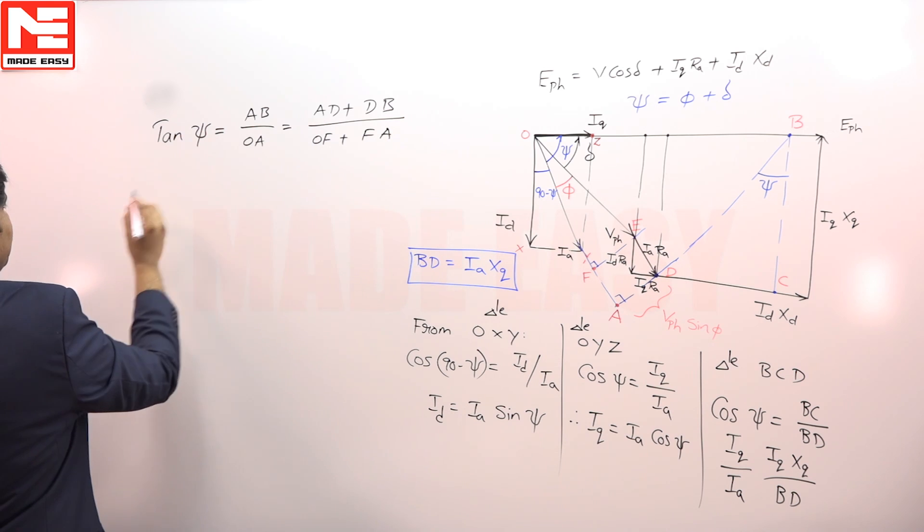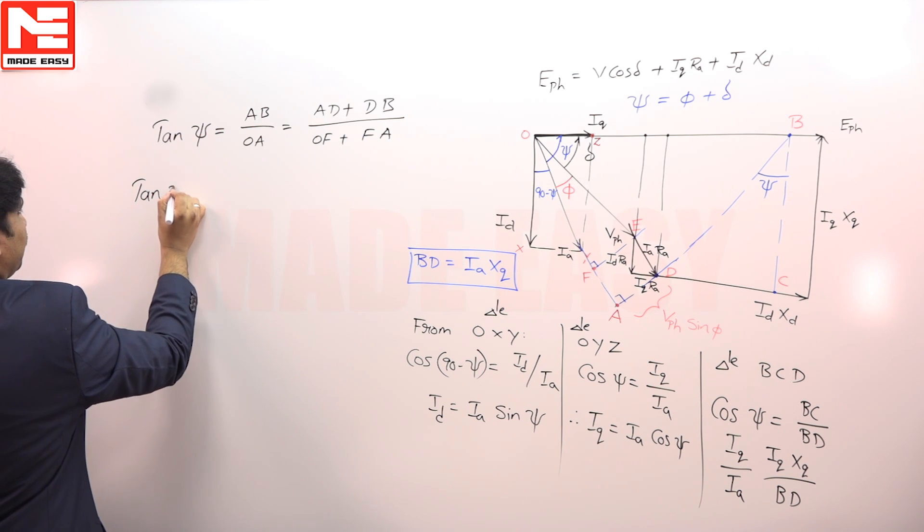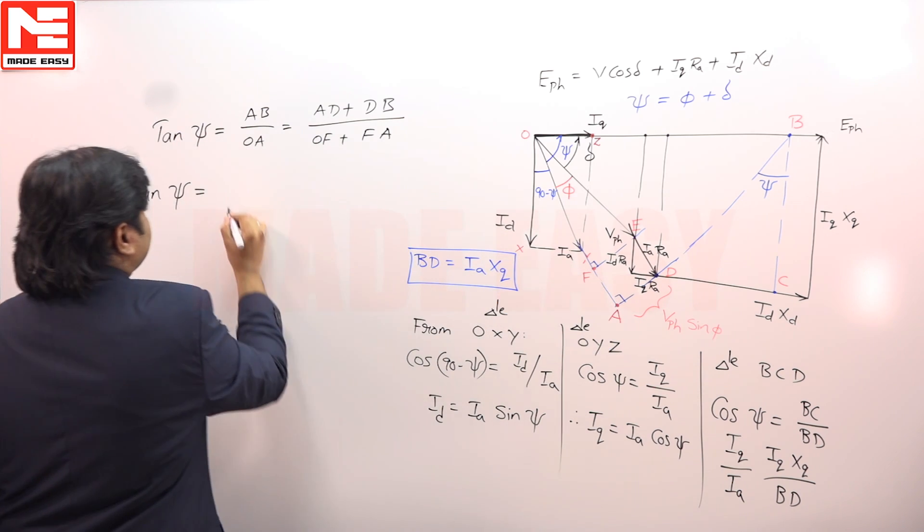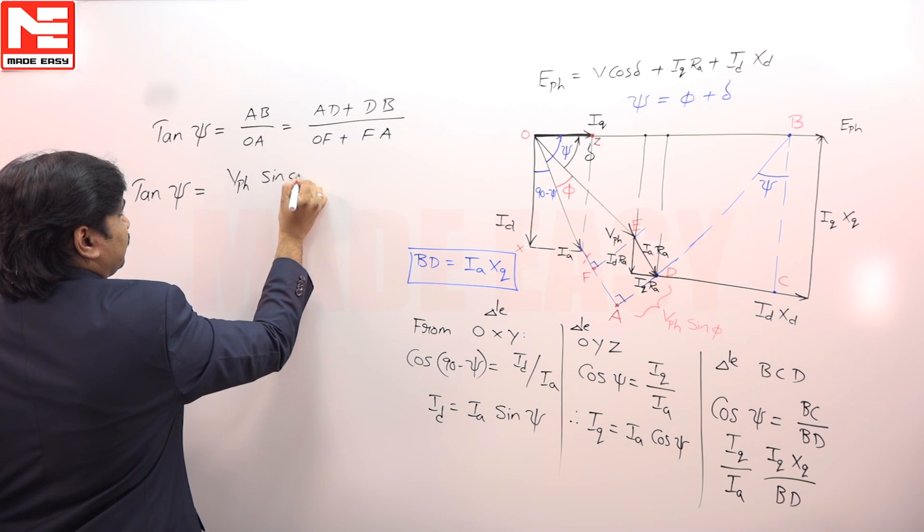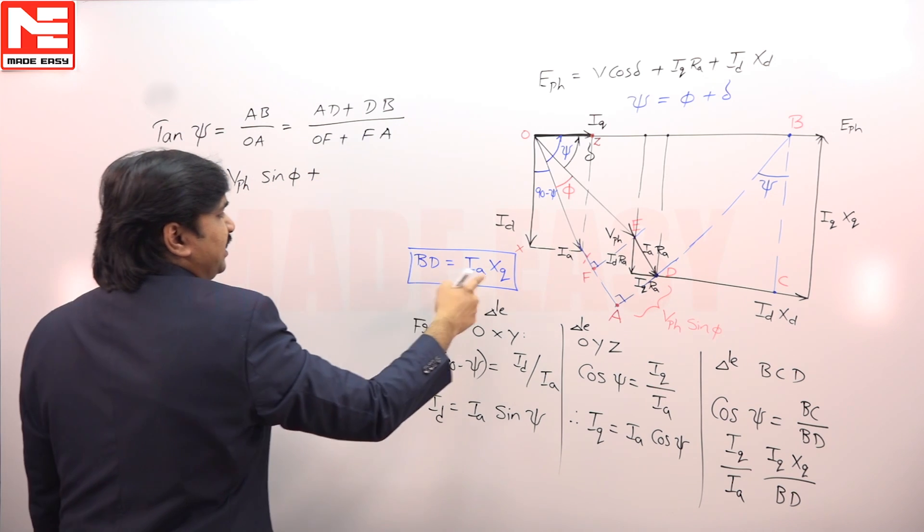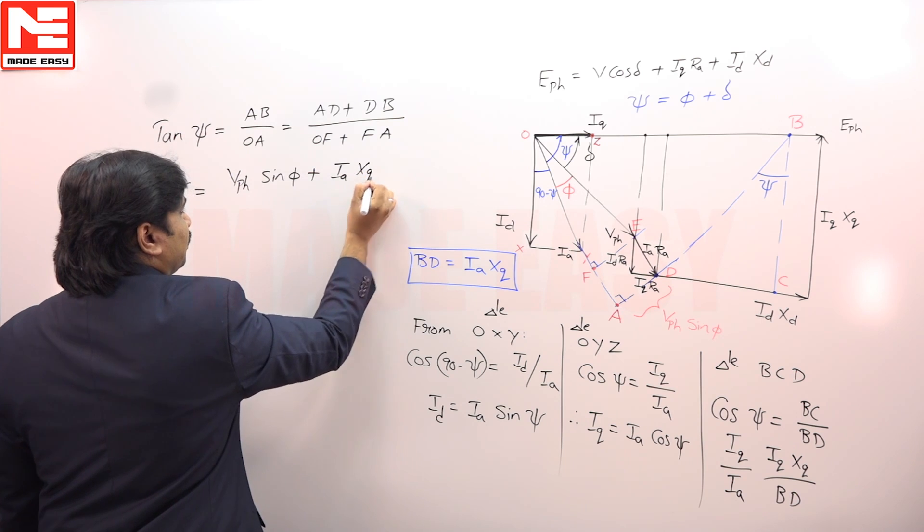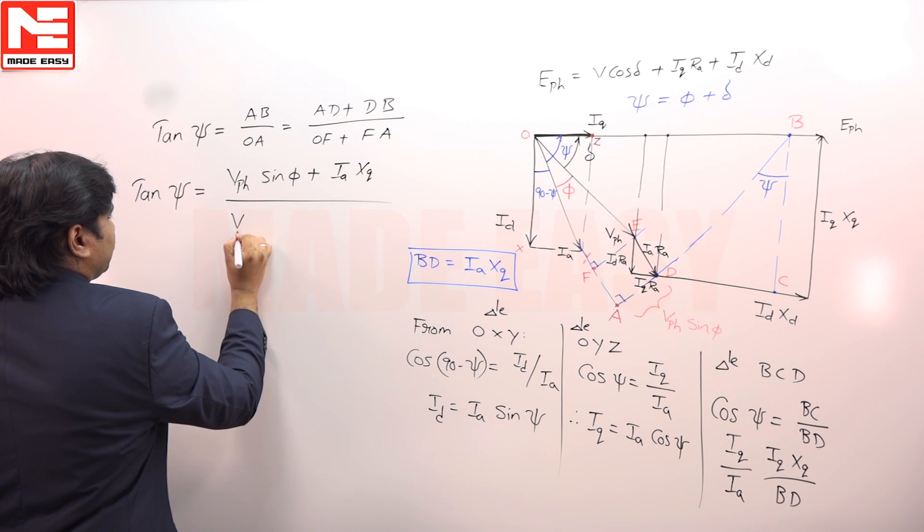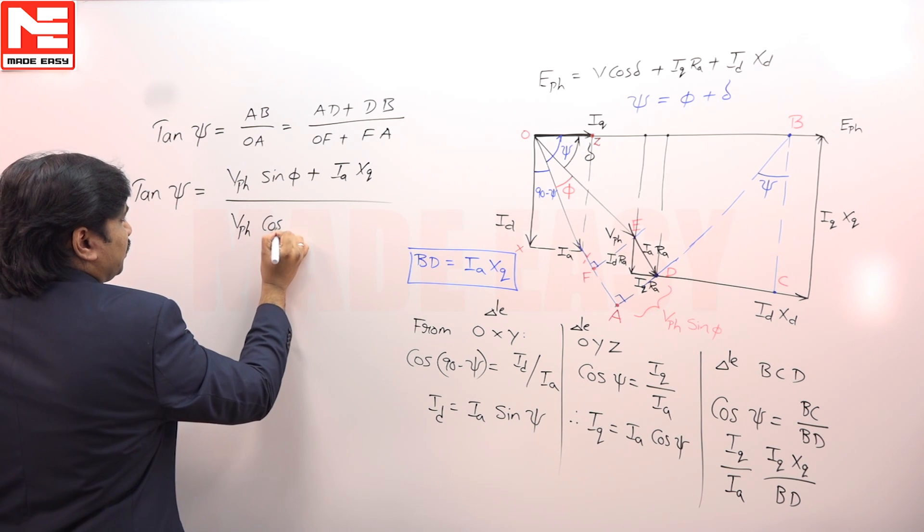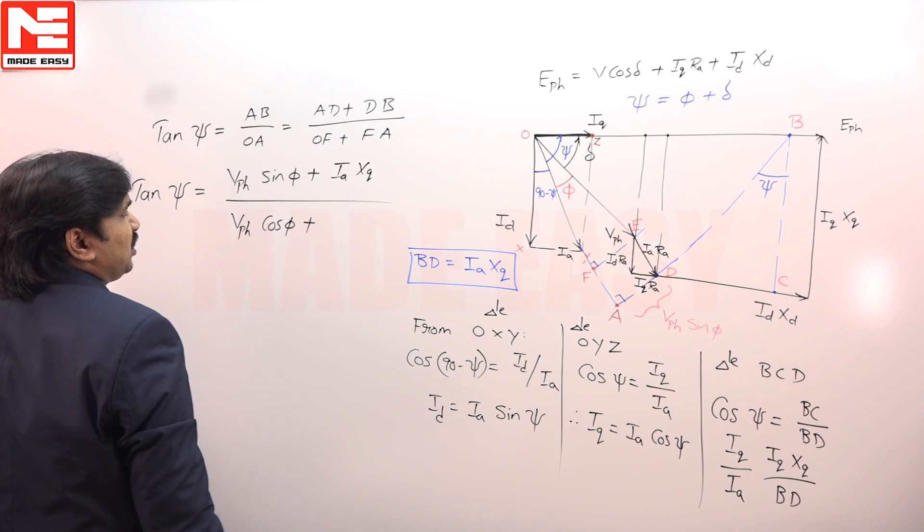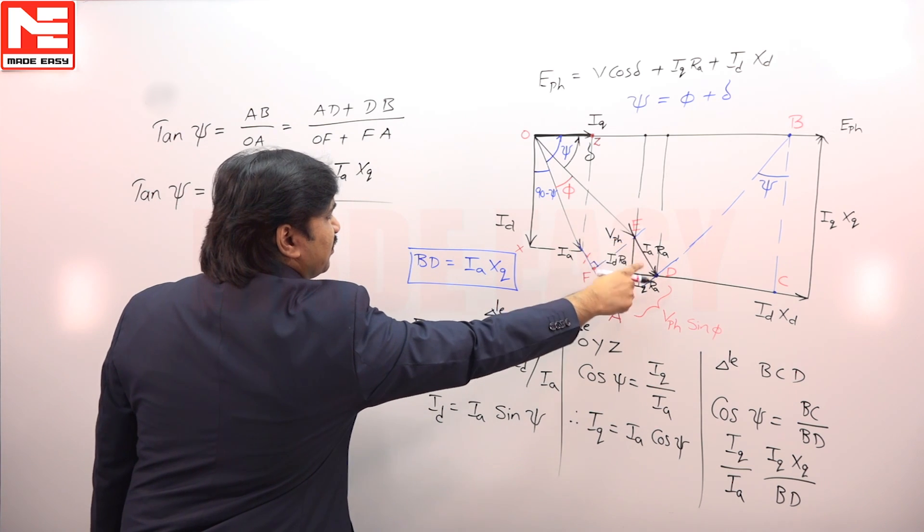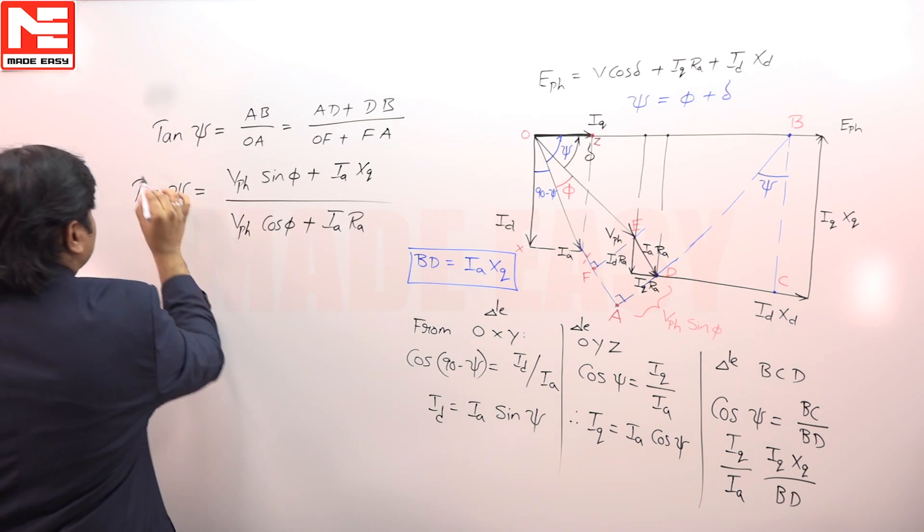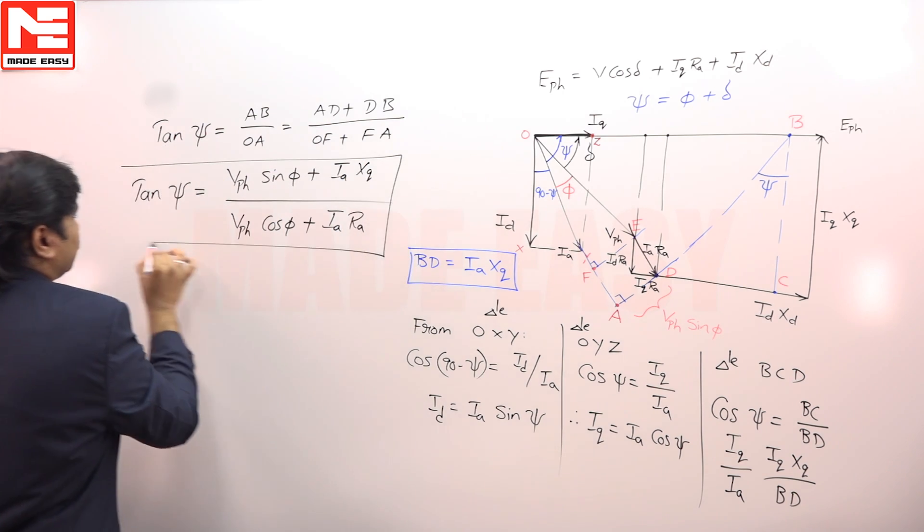Then, tan psi is equal to, what is AD? AD is V phase sin phi plus what is BD? IA XQ by what is OF? V phase cos phi plus what is FA? IA RA. These are the parallels, IA RA. This is one equation.